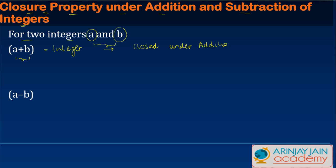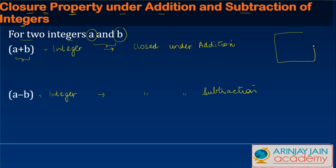Similarly, for two integers, if a minus b is also an integer, we say that the integers are closed under subtraction. Think of it like this: let's say this box contains various integers within it, and a and b are two of them.